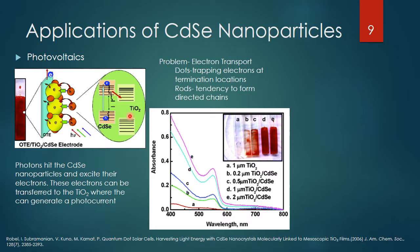The cadmium selenide absorbs this visible spectrum light — it absorbs the photon — and the photon excites the electrons, which can move up into the excited energy levels of the cadmium selenide. This electron can then move over into the titanium oxide's higher excited energy levels, where the bandgap is a lot larger.